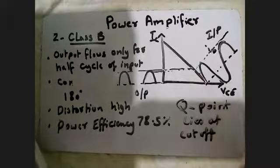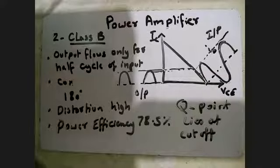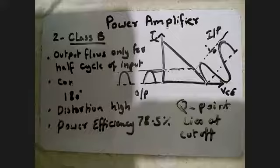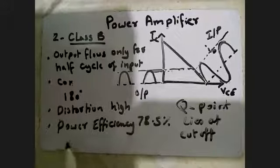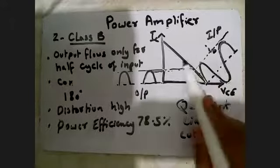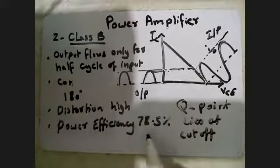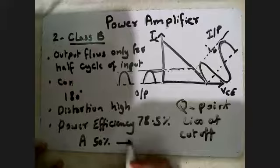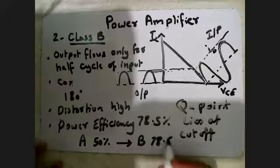If we compare Class A and Class B amplifier without considering other factors like power losses or distortion: Class A amplifier has 50% efficiency, while Class B amplifier has 78.5% efficiency. So Class B is more efficient than Class A.